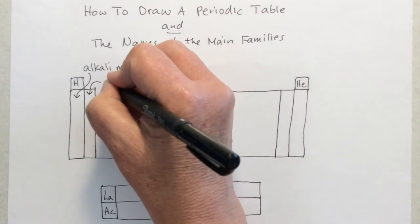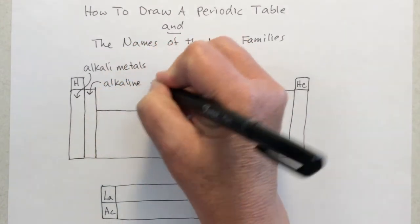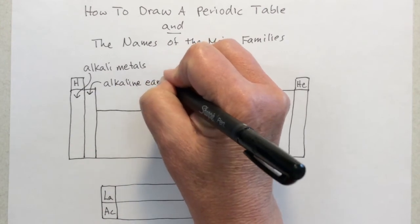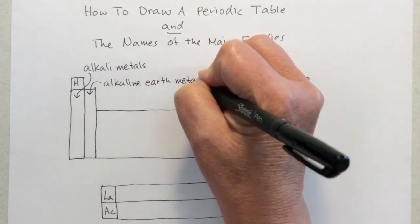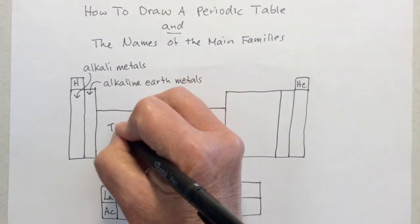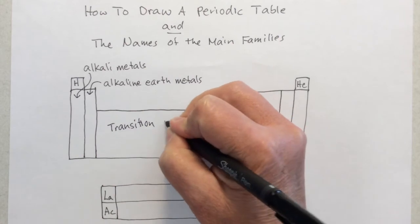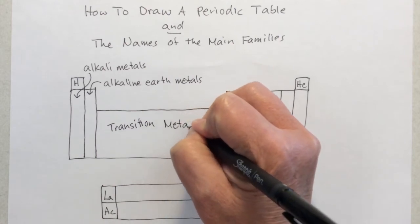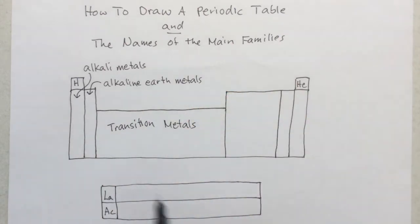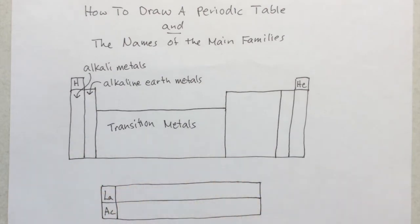As it says, they're both full of metals. Then this box in between is called the transition metals, and what it's transitioning to and from you'll get later. But these are all called the transition metals. Iron, gold, and copper are all in there.